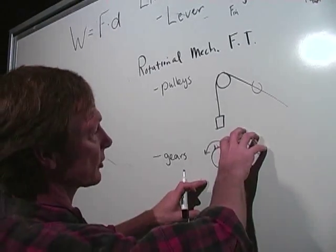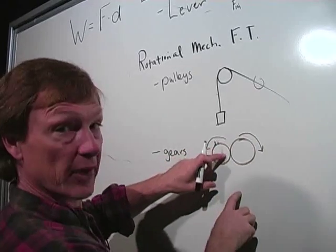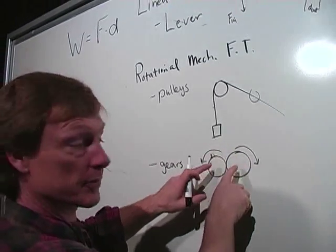You can see if this one's bigger, it's going to have more teeth. And it's going to provide a bigger torque, whereas this one will move faster, right? Because this will complete a revolution faster than this big one because it has less teeth.